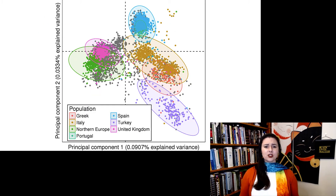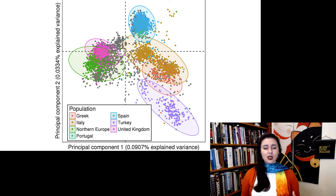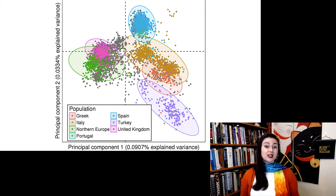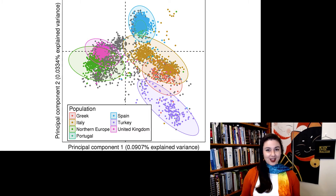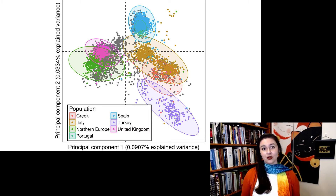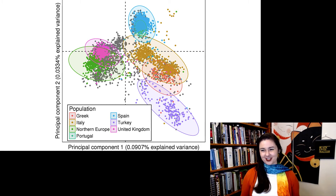Here is a really cool analysis done on modern European populations, and you can see there's just a lot of overlap between these different populations. So even though we can find these differences, most of our differences are cultural and not reflected in our biology.